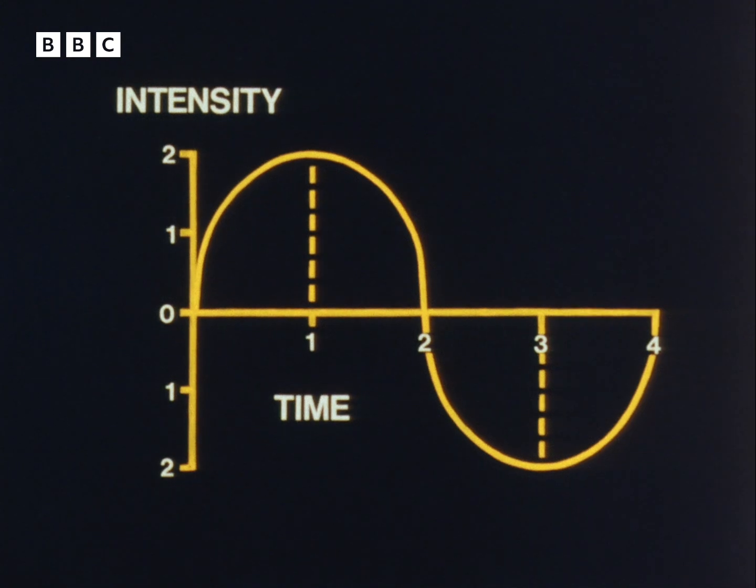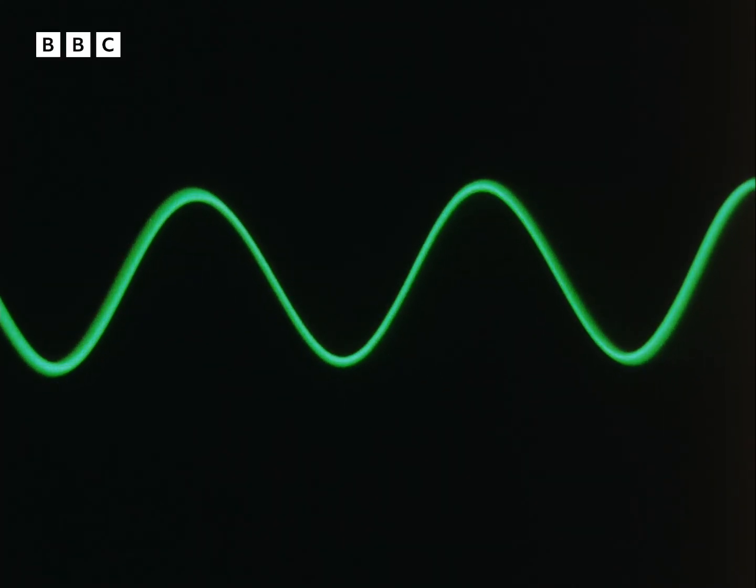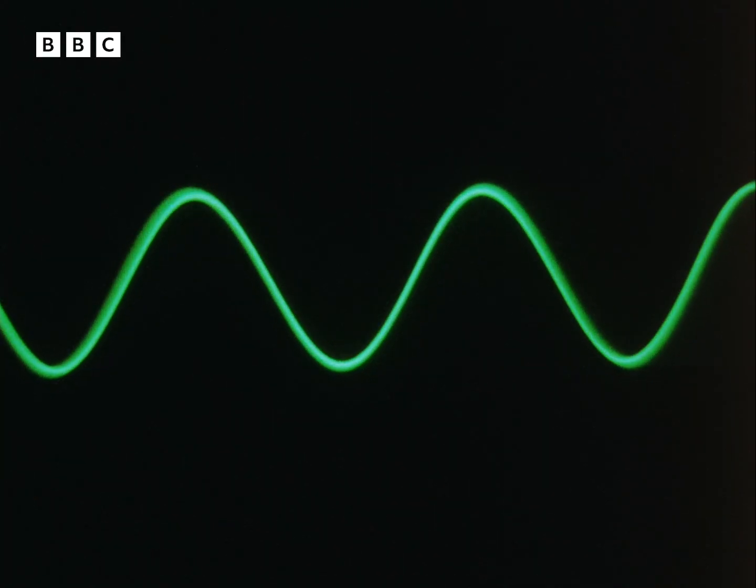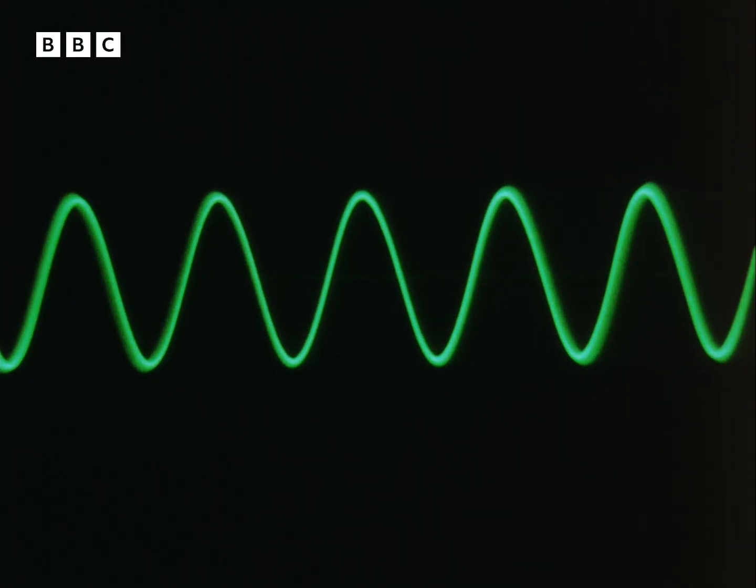This curve represents one complete cycle. Because it all happened in four milliseconds, the complete cycle can occur 250 times in one second — a frequency of 250 cycles per second, which is close to middle C. A device called an oscilloscope can give a graphic illustration of a note immediately it is played. If we double the frequency from 250 to 500 cycles per second, we raise the pitch by one octave.